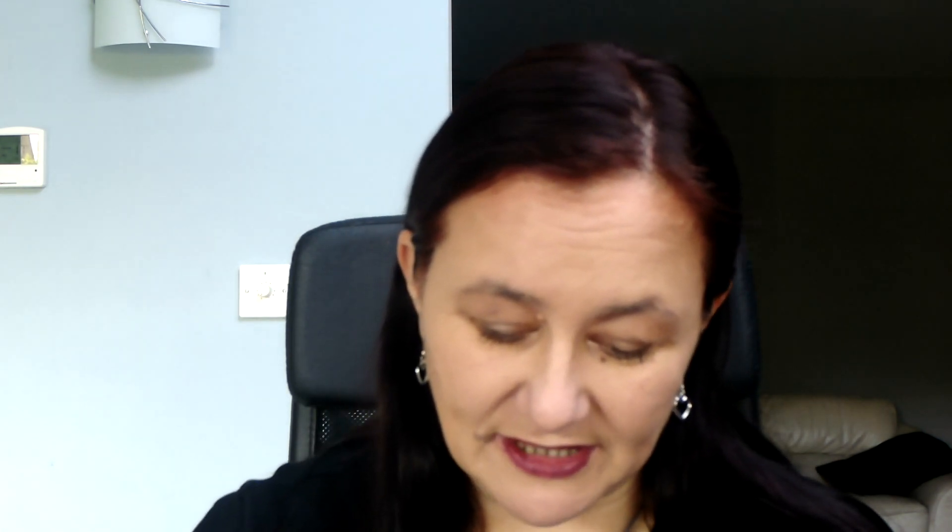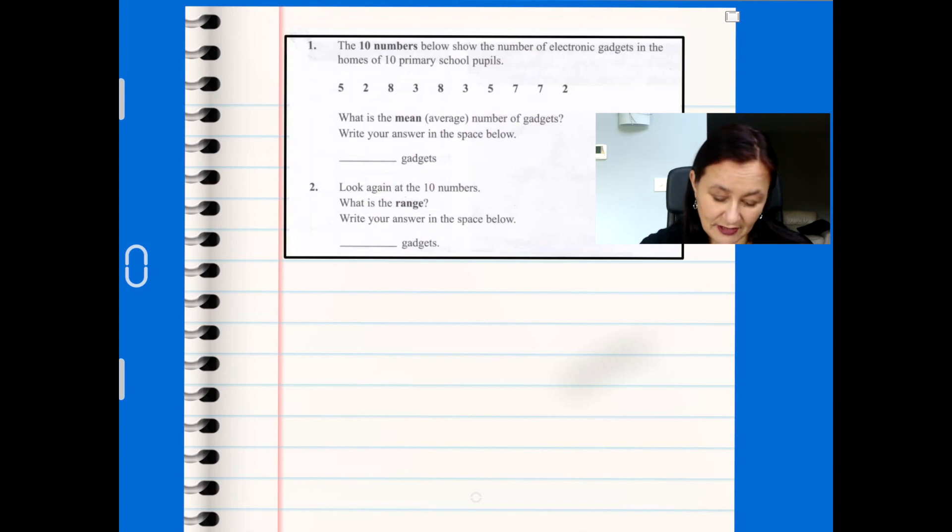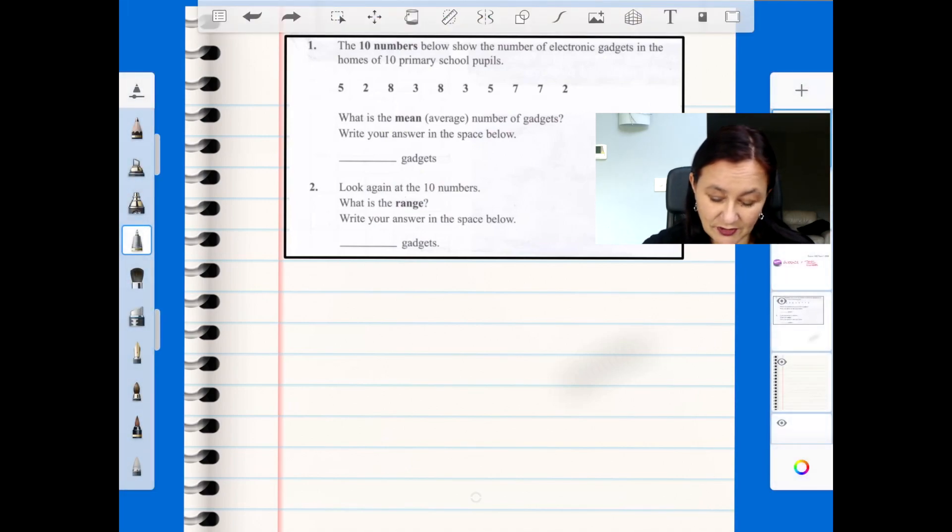So I'll be looking down in order to capture and annotate the question and I'll be sharing that with you obviously. So what we have this first question, we've got 10 numbers of electronic gadgets in the house of 10 primary school kids. So we've got 10 numbers and we've got the average, we're asked for the average.